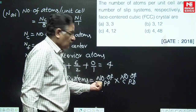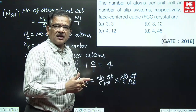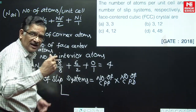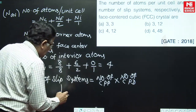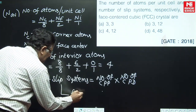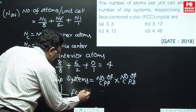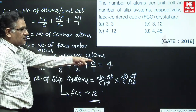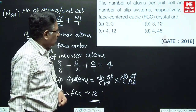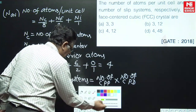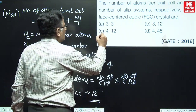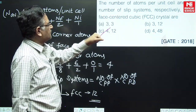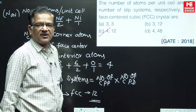Therefore, based on rigorous practice of planar density and linear density calculations, we understand that for FCC materials, the number of slip systems is 12. Number of slip systems for FCC materials is 12, and number of atoms per unit cell is 4.